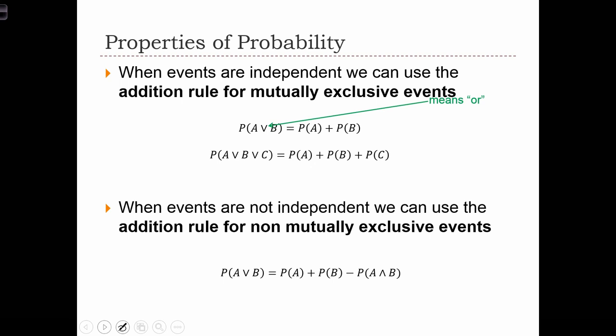When events are independent, we can use the addition rule for mutually exclusive events. Here we're going to use the upside-down caret to mean OR. So the notation here is the probability of A or B occurring. When the events are mutually exclusive, we can use the additive rule that says the probability of A or B equals the probability of A plus the probability of B. And we can extend that into three events or more by simply adding these probabilities. Now this is only the case if the events that we are investigating here are mutually exclusive. That means that none of the outcomes that constitute event A can be an outcome that constitutes event B.